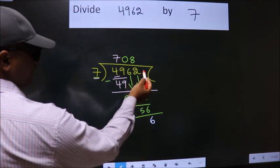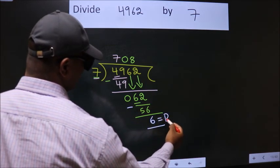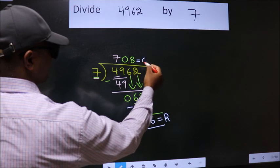No more numbers to bring it down. So we stop here. This is our remainder. This is our quotient.